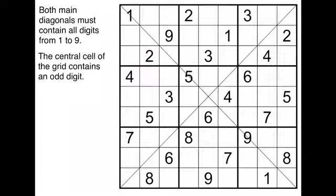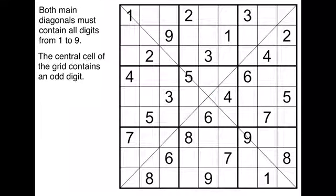One video where I use the constraint that the central cell contains an odd digit, and then a second video with the tricky solve when you don't use this information. Let me recap: this is a normal Sudoku where every row and every column has every digit from one to nine exactly once, and both diagonals must also contain every digit — this is the variant called diagonal Sudoku or X Sudoku. The constraint on the central cell means it can't be one, five, nine, or three, so it's obviously a seven.